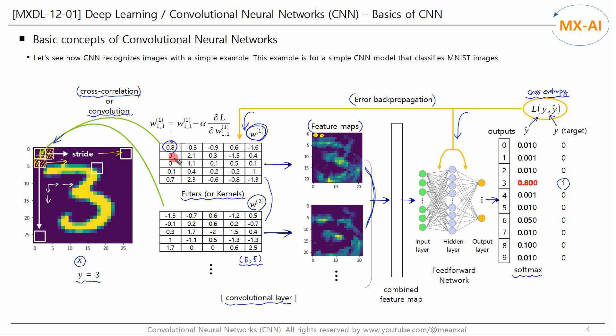Each element of the filter is updated using gradient descent. Initially, the elements of each filter are filled with random values, and they are updated repeatedly to minimize the loss. Filters learn how to view the image from their own perspective. This is the training process of CNN. In the prediction process, an image is input to the trained CNN model and classified into the category with the highest probability output from the feedforward network.